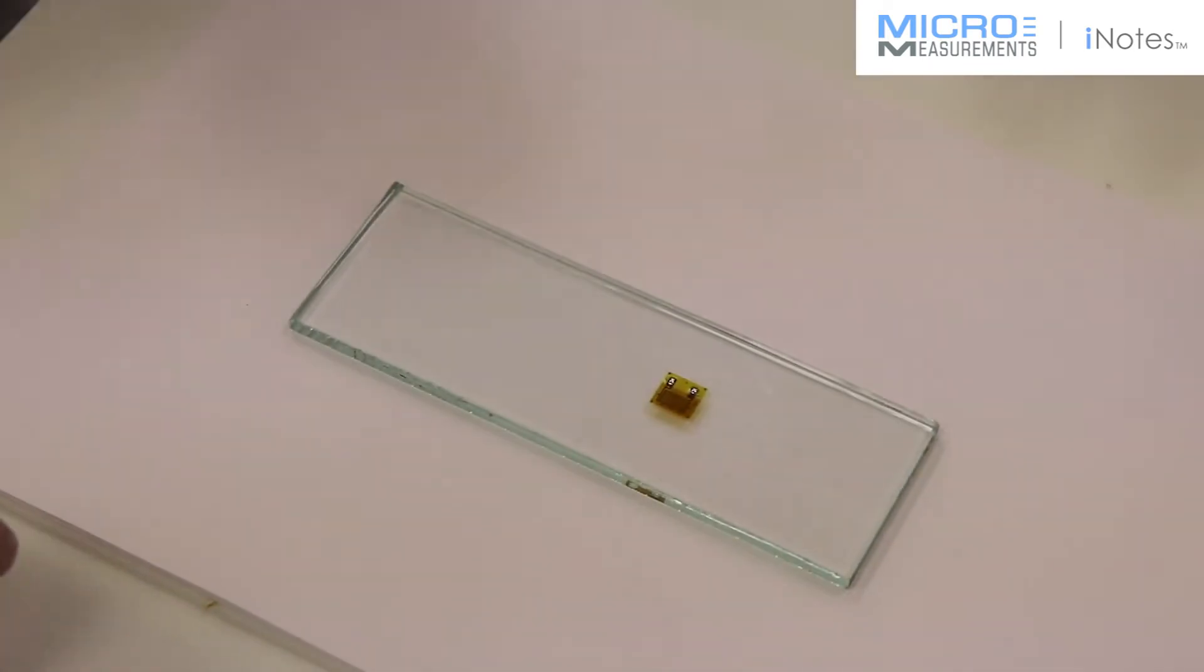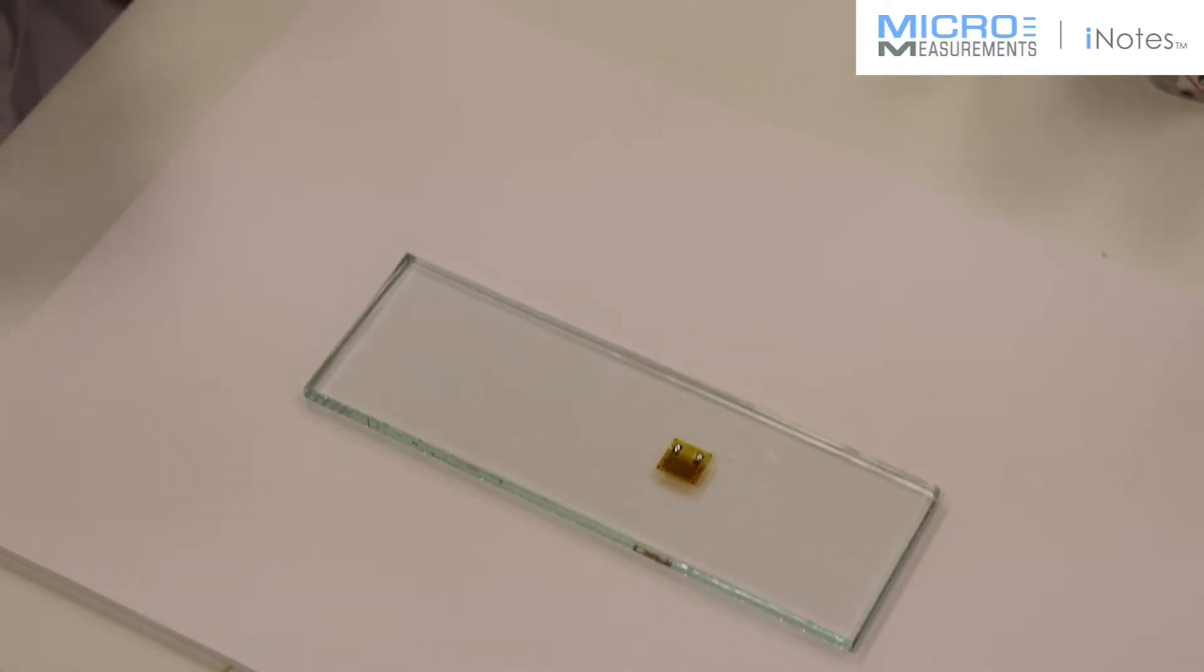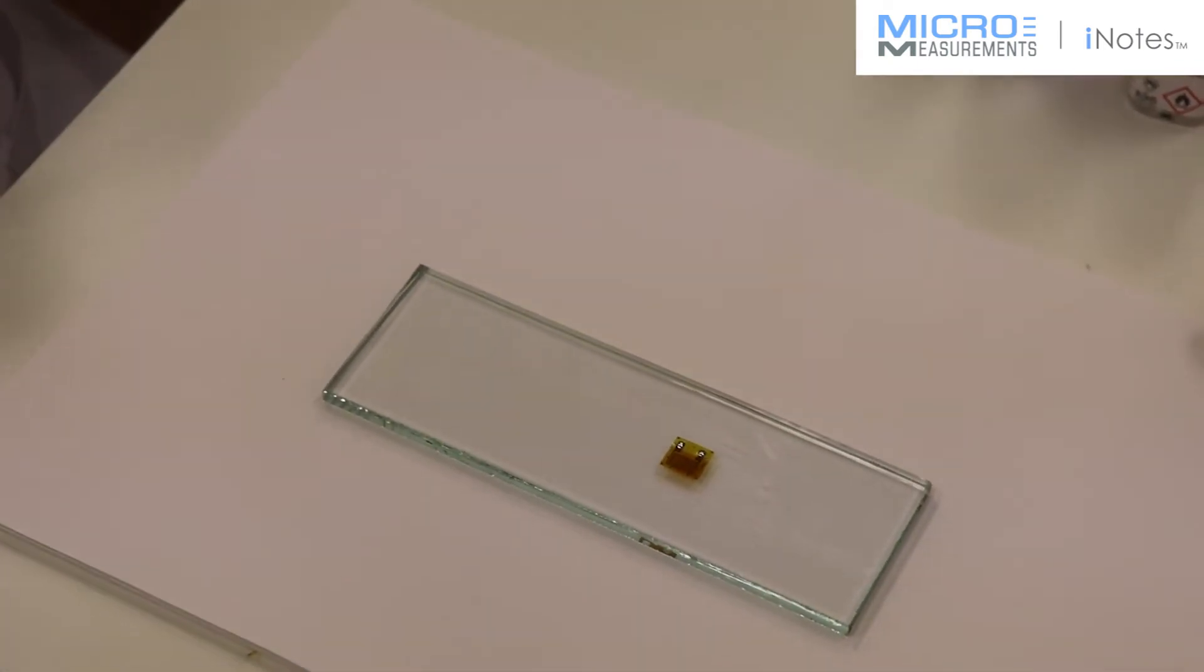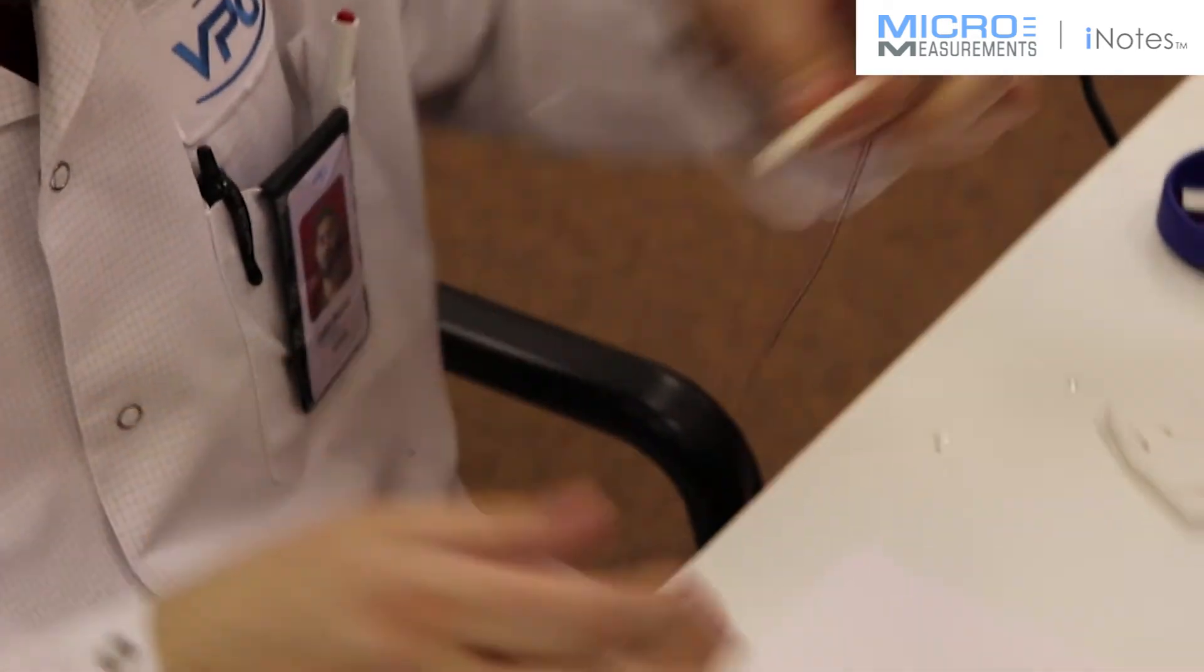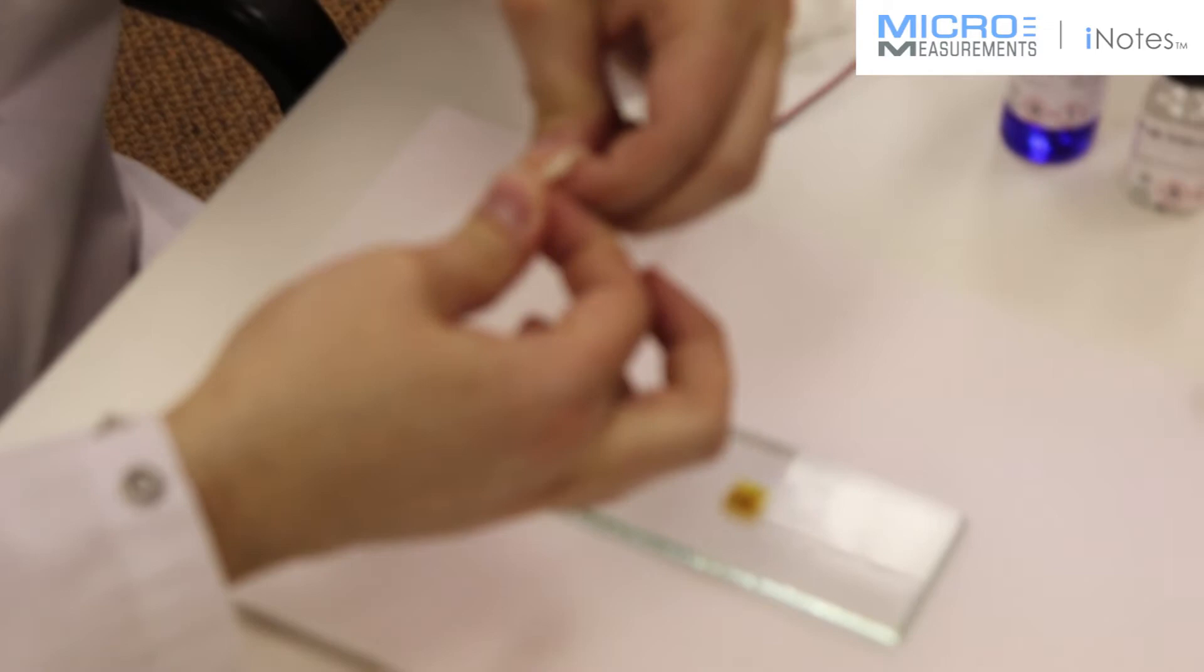He's going to take a piece of the paper drafting tape, the PDT-3, place that at the edge of the lead wire insulation and the beginning of the conductors that are exposed, and he's going to form the classic cobra head.